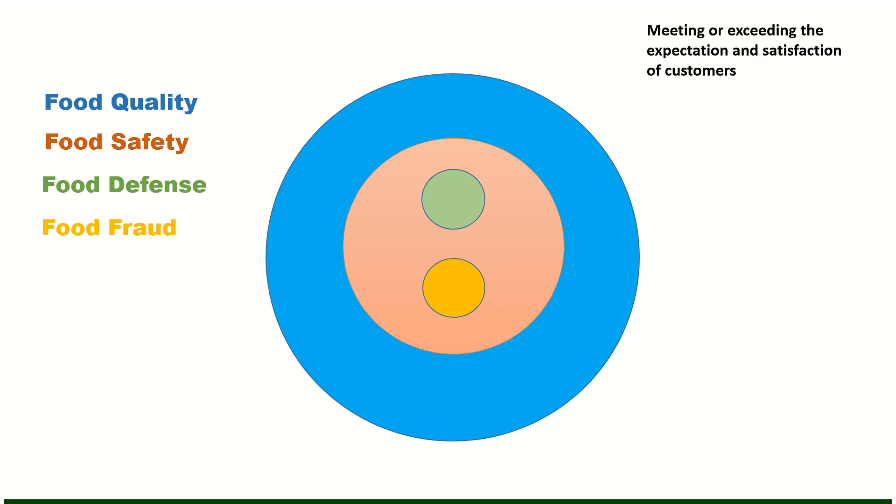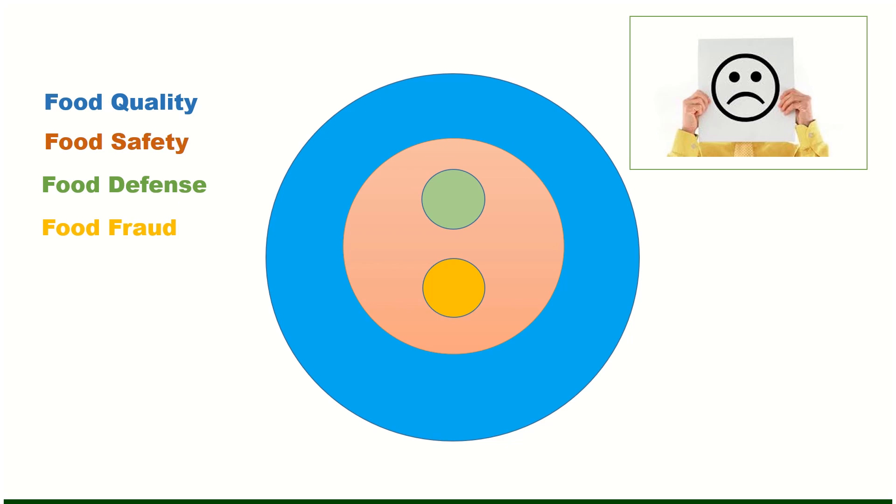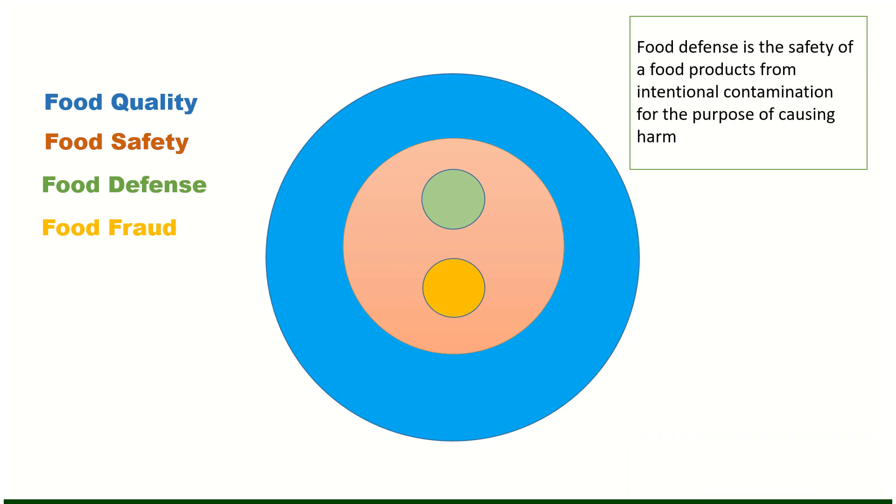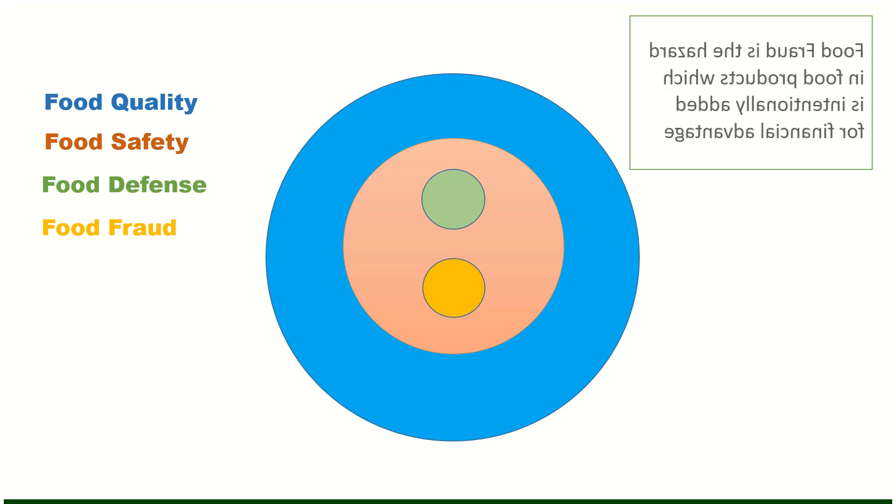Simply, quality is defined as meeting or exceeding the expectation and satisfaction of customers or consumers. Any harmful effect to people or customer comes under the definition of food safety. Food defense is the safety of food products from intentional contamination for the purpose of causing harm, and food fraud is the hazard in food products which is intentionally added for financial advantage.